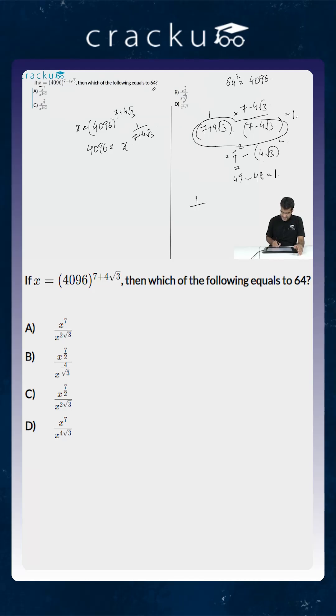So the value of 1 by 7 plus 4 square root of 3 is equal to 7 minus 4 square root of 3. So the value of 4096 is equal to x to the power 7 minus 4 square root of 3.